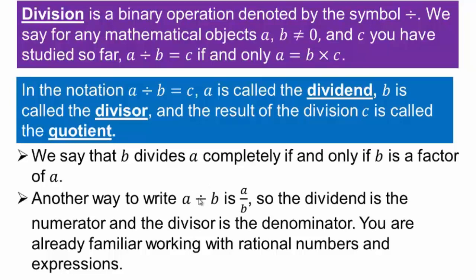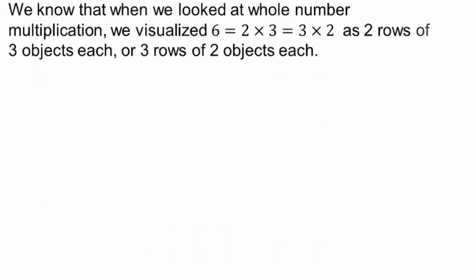It might be worth your while to look at the history of division. The notation we currently use for arithmetic symbols is not that old. In the really olden days — thousands of years ago — people used to write a with b under it but without the bar to represent fractions. When looking at multiplication, we looked at 6 as 2 times 3: two rows of three objects or three rows of two.